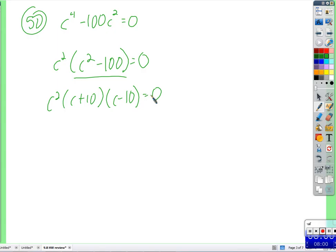Difference of two squares. C squared times c plus ten times c minus ten equals zero. Here is the clever part. We have a thing times another thing times another thing, and we use the zero product property. The zero product property says we're multiplying things together and we're getting zero. So we know what? What do we know for sure?